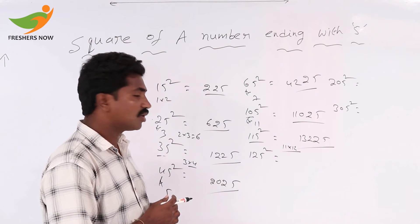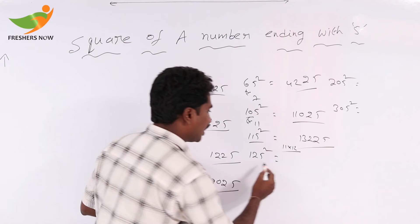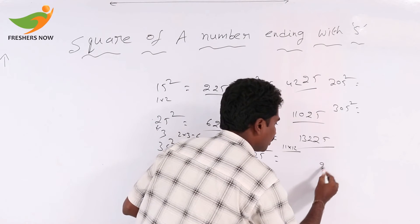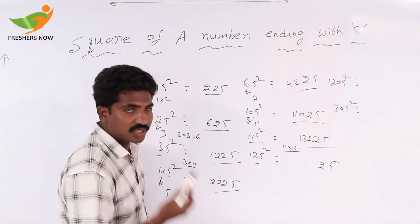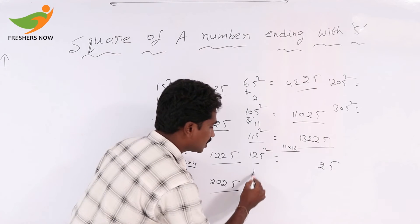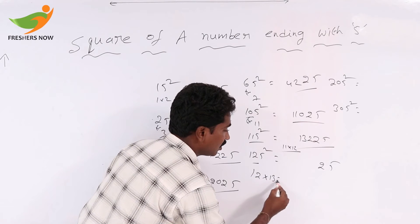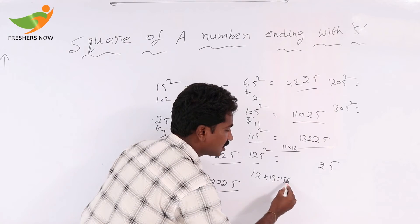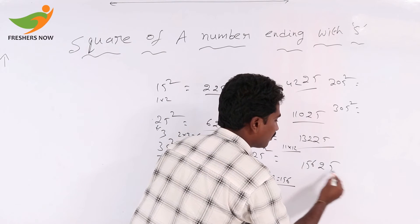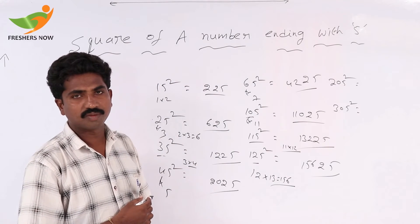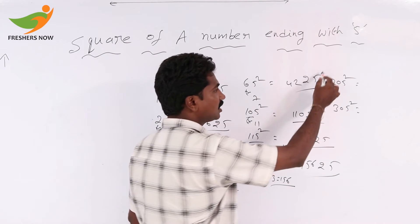For 125 square: 5 square equals 25. The remaining part is 12. The next number after 12 is 13, so 12 into 13 equals 156. So 125 squared equals 15625.